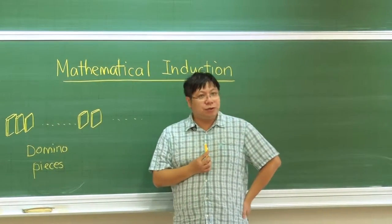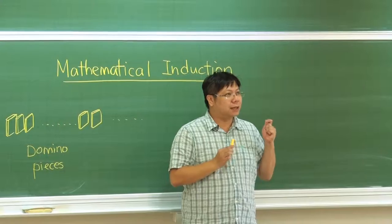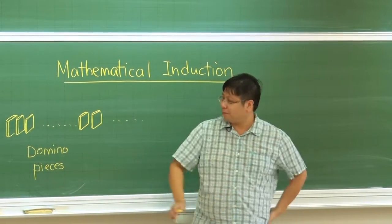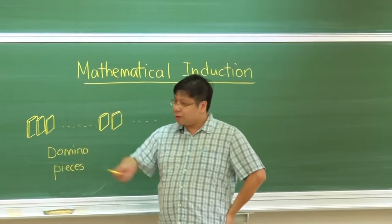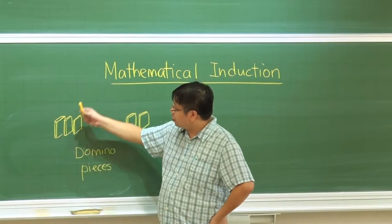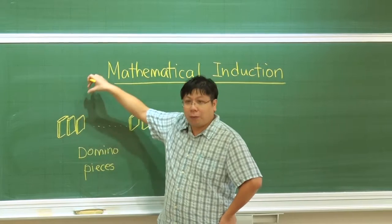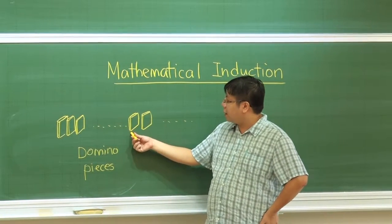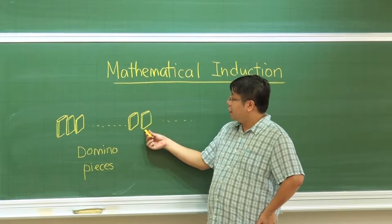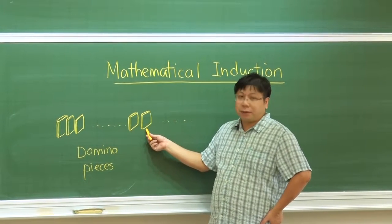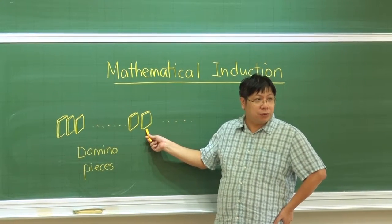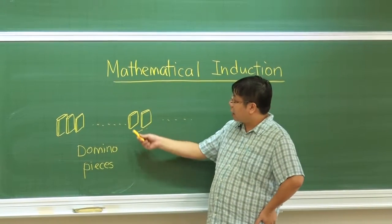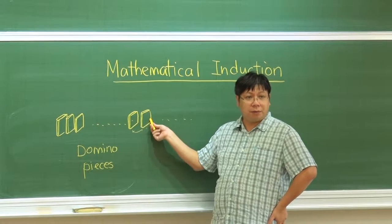Imagine we are a designer of this kind of domino puzzle. What we need to do is place the domino pieces one by one. When we place one piece, we next place the following one. What we need to make sure is that these two are close enough to each other, so that if this one falls, the next one will fall.